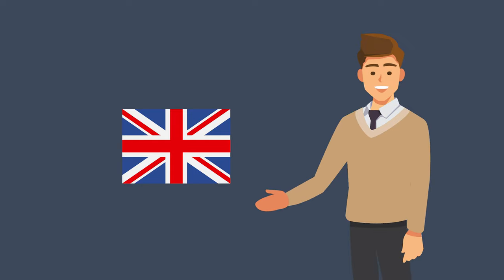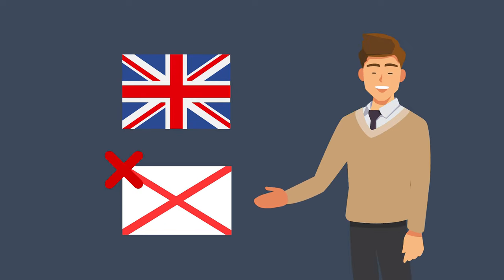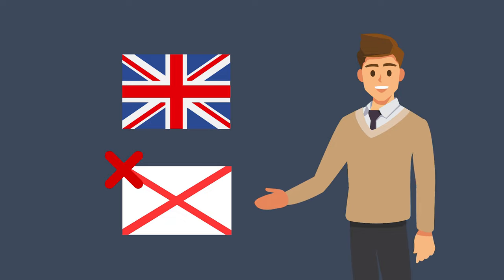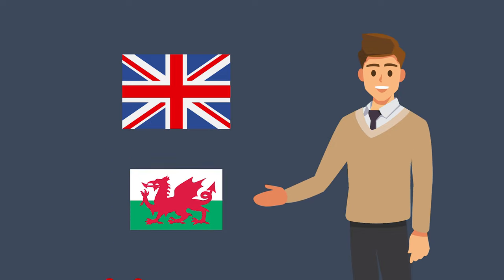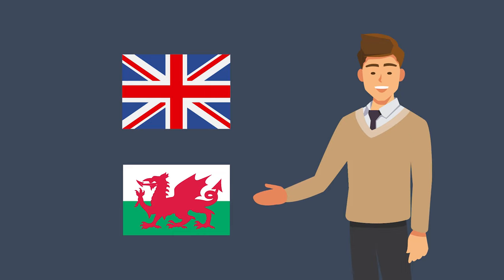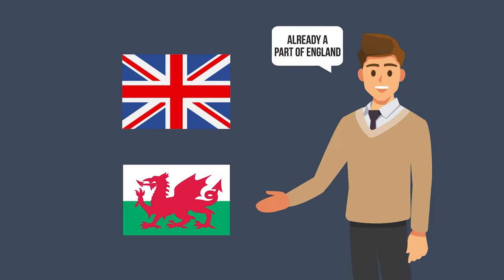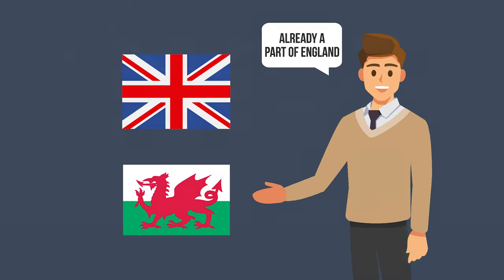Since then, the flag has remained unaltered despite the Republic of Ireland no longer being part of the United Kingdom. In addition, the Welsh flag is not included in the Union Flag, as when the first Union Flag was created, Wales was no longer a principality and had already been united with England.